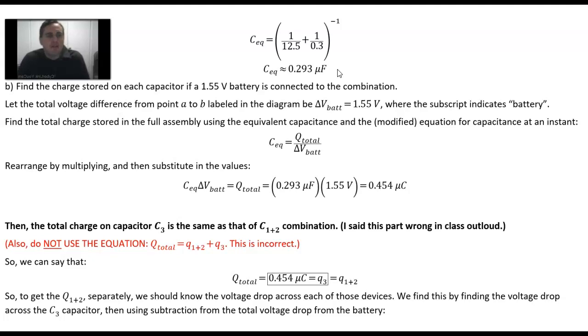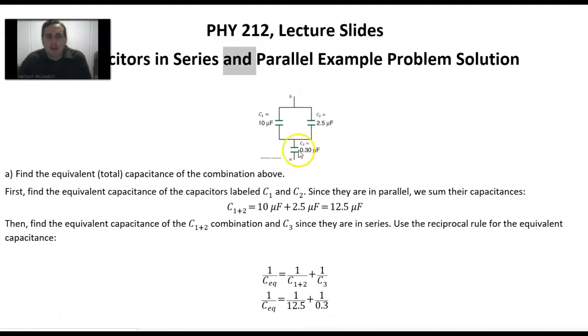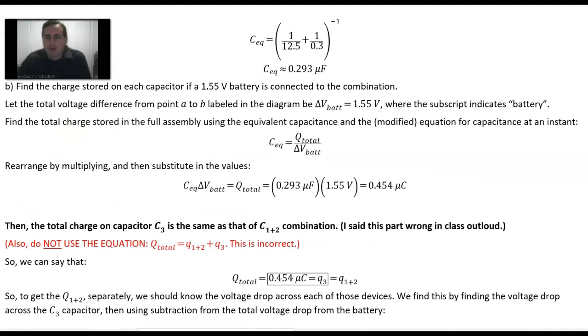Part B: find the total charge stored on each capacitor if a 1.55 volt battery is connected to the combination. We want to assume that the voltage difference between A and B as labeled on the diagram is 1.55 volts. So with that in mind, we say find the total charge stored on the full assembly first.